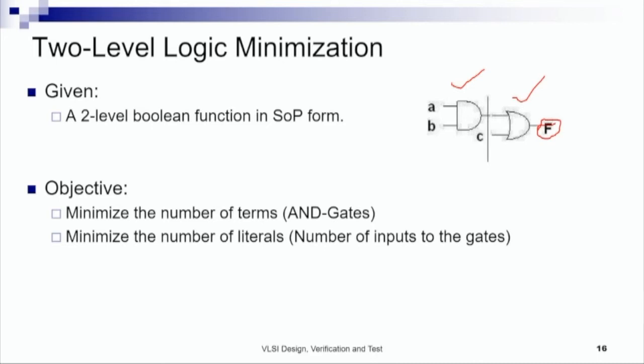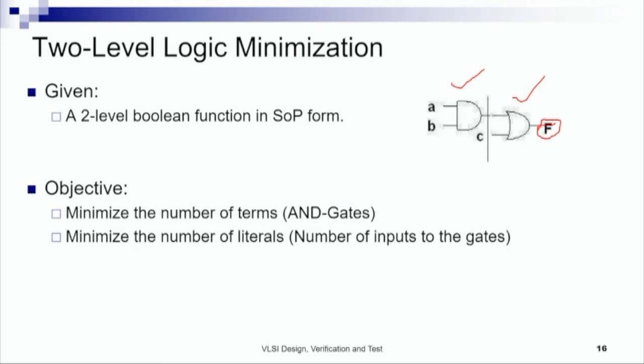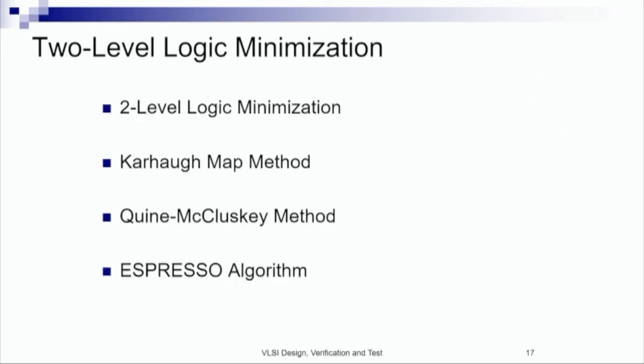The objective of two-level logic simplification is to minimize the number of AND terms — we want to minimize the number of AND gates — and also to minimize the number of literals, that is, the number of inputs to the gates. There are different methodologies applied for two-level logic minimization. The first, which we all know, is the Karnaugh map method. Many have also studied the Quine-McCluskey method, and what we will study today is almost a standard tool used in VLSI design in logic synthesis. This is called the Espresso algorithm — a heuristic algorithm for two-level logic minimization.